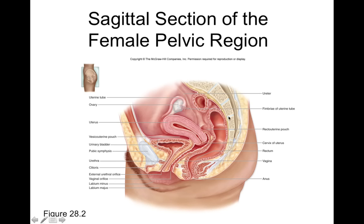Starting with the female system, here is a mid-sagittal view of the pelvic area, almost identical to the model seen in the lab. We can see the mons pubis — a fatty pad of adipose tissue just anterior to the pubic symphysis. The pubic symphysis is a little bit of fibrocartilage between the two halves of the pelvis.